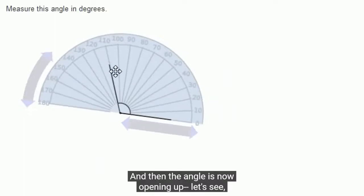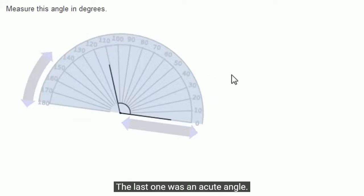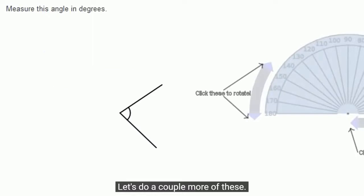And the angle is now opening up, the other side is pointing to 110 degrees. So this is larger than 90 degrees. It's also an obtuse angle. The last one was an acute angle. This is obtuse, 110 degrees, more than 90 degrees. I got the right answer. Let's do a couple more of these.